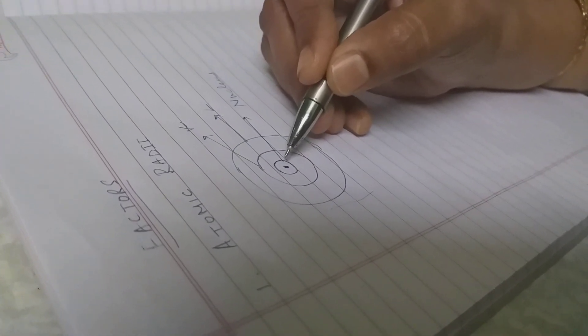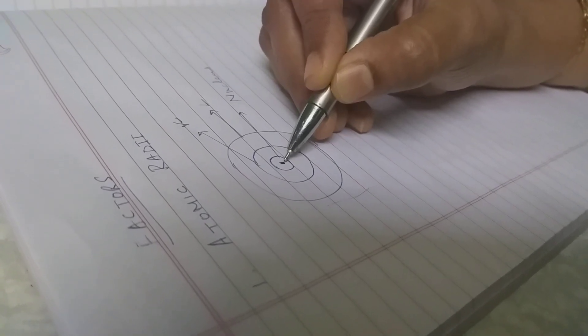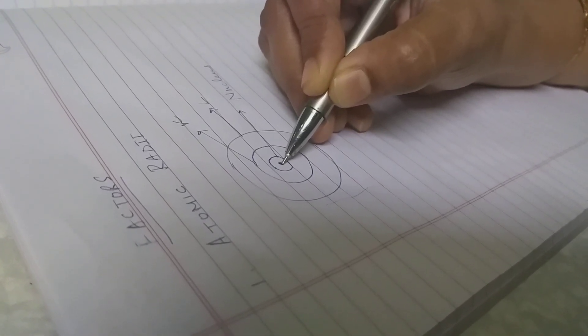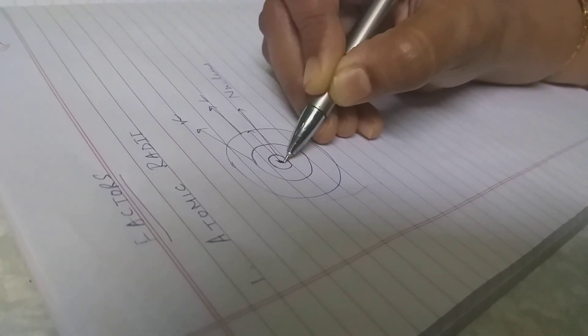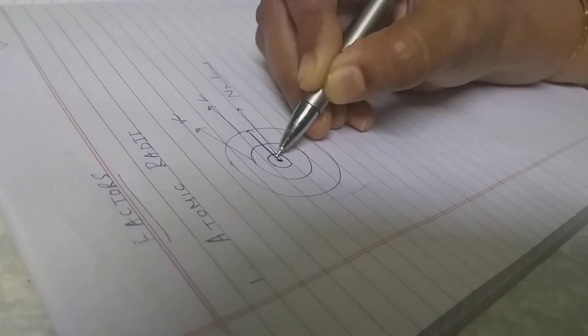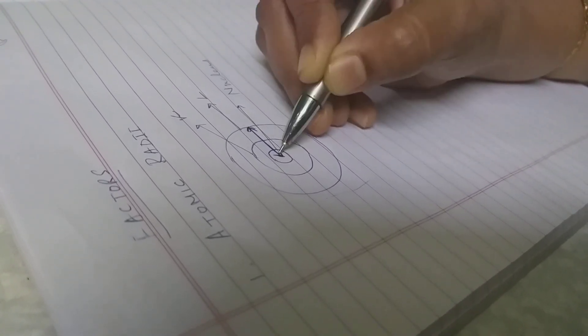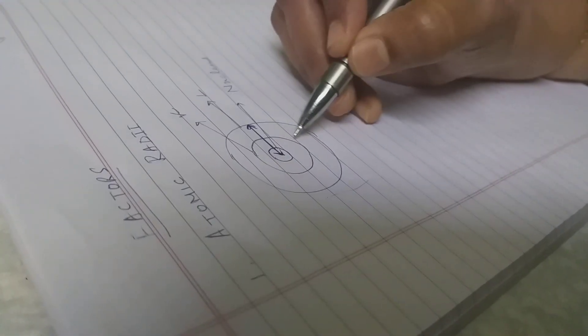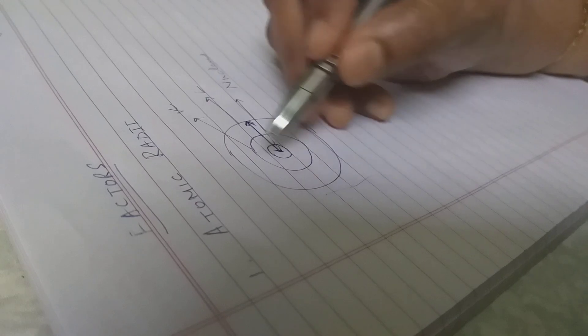Atomic radii means, as in a circle we understand what is the radius, here also is the same thing. Only difference is that atomic radii from the center of the atom to the last shell of an atom. That means in a circle there is a fixed radius, you understand.